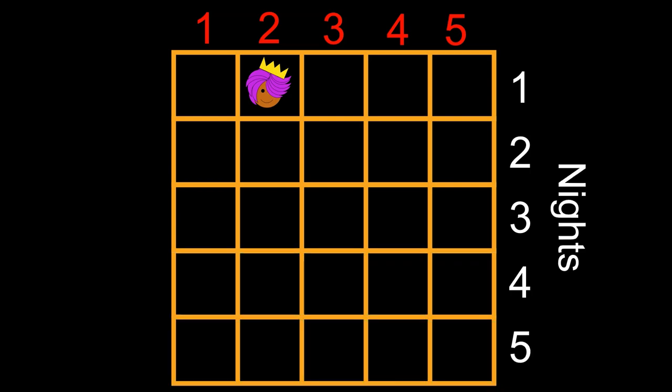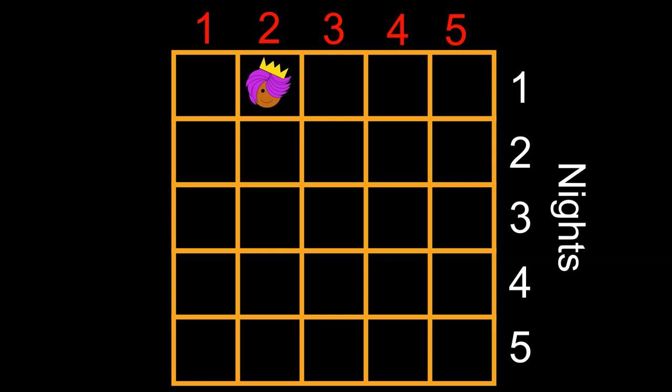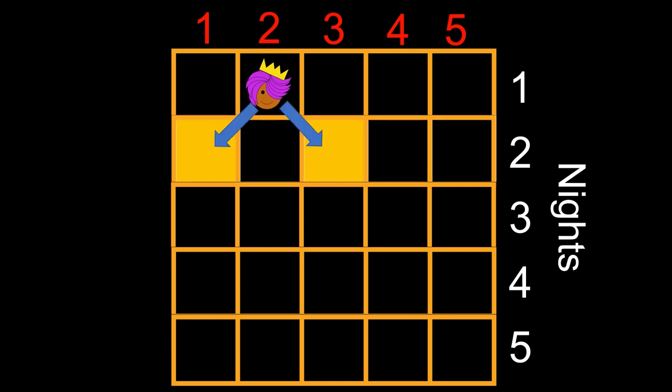This creates a 2D grid of space and time representing all possible rooms on all possible nights. And this makes it much easier to spot the patterns. Now we know that the princess has to move to any adjacent room for the next night. On this grid, this means that on night number two, she can only be on one of these two rooms. We immediately start seeing a pattern. She can only move diagonally forwards in time.